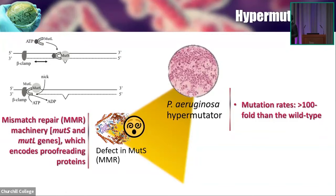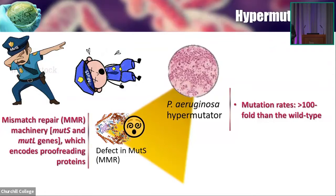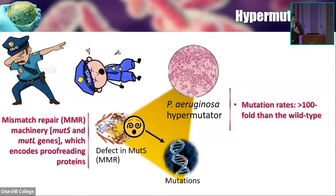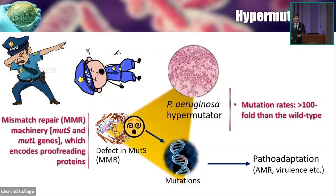However, if the normal policeman has a defect, then the erroneous mismatch in the DNA cannot be fixed or repaired. What will happen is mutations occur, and that's why we see a lot of different phenotypes appearing from a plate where we culture the hypermutator — big colonies, small colonies — and some of them are involved in pathoadaptation, for example, antimicrobial resistance and virulence.